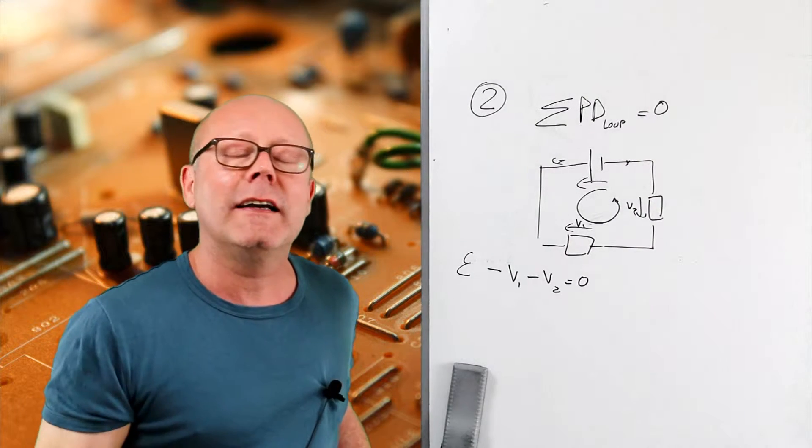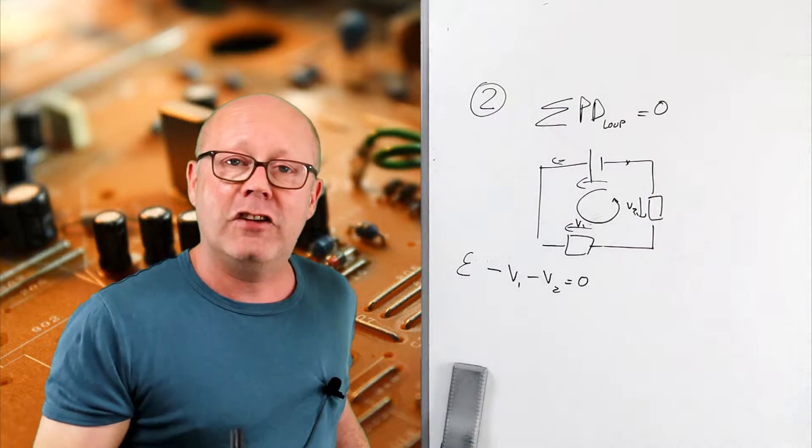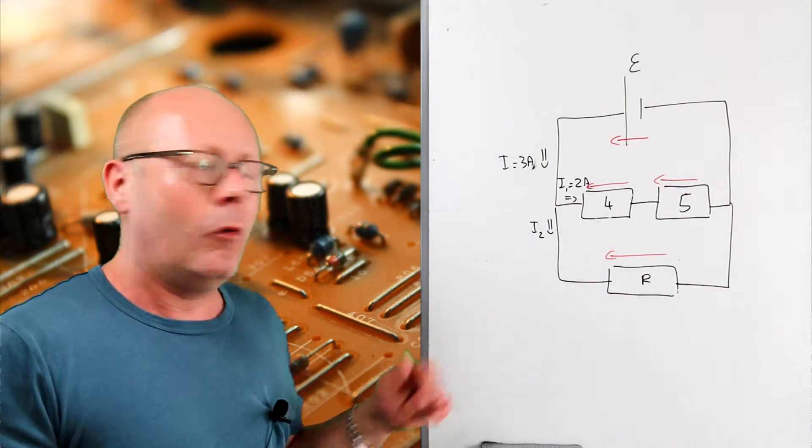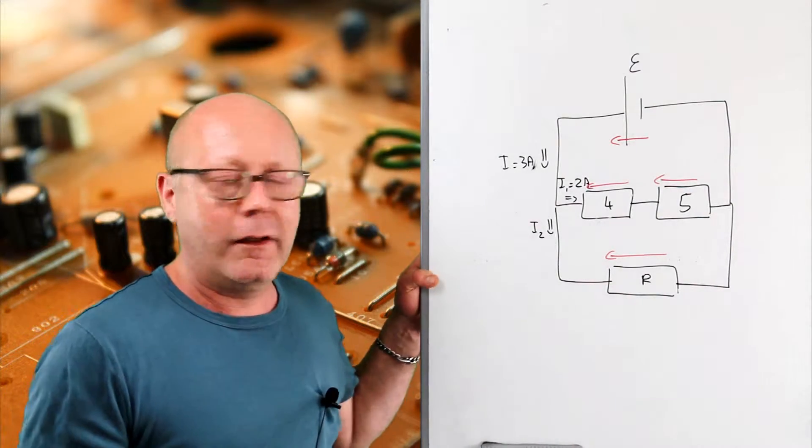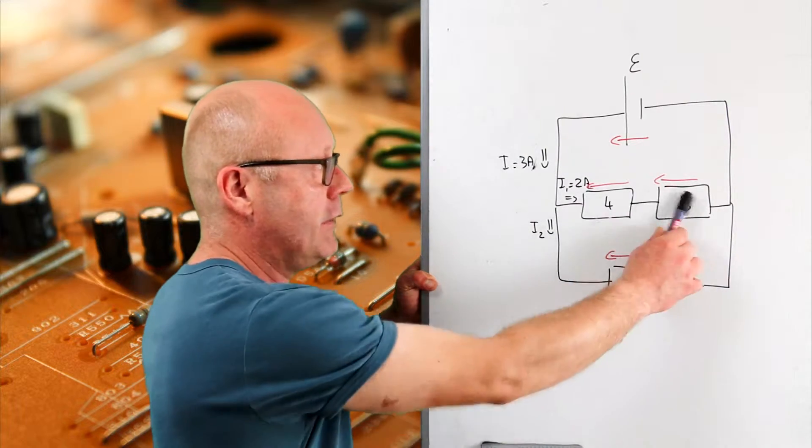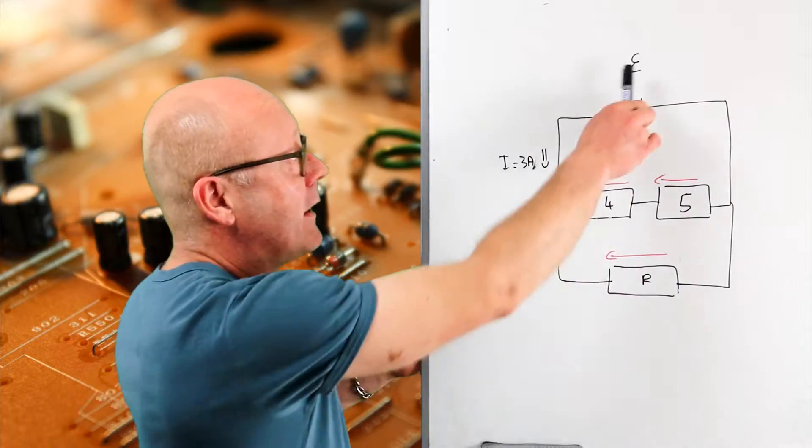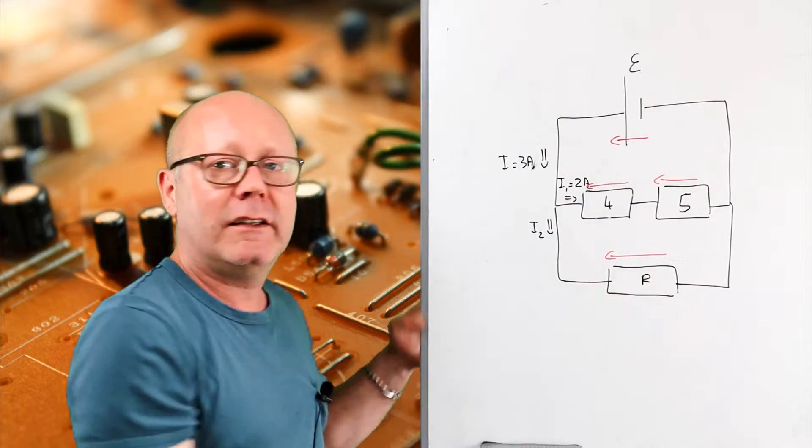Now these two laws allow you to find relationships in a circuit. I'll give you an example. In this example, we have a circuit with two resistors in series which are in parallel with a resistor R. What is asked from us is to find the EMF and to find the resistor R.